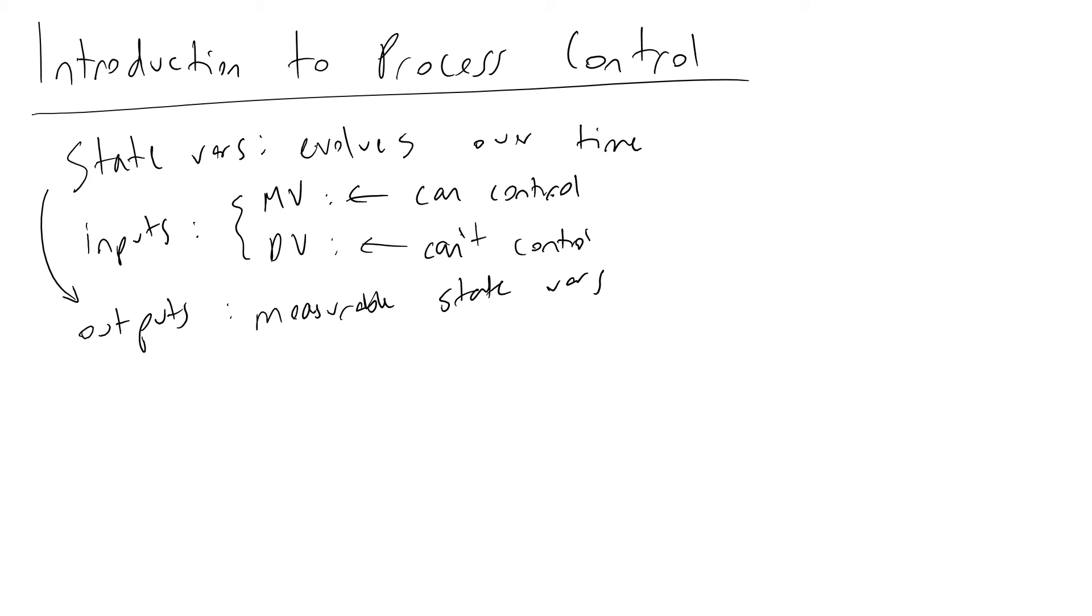By that point your reactor may be at a different concentration. Temperature would be a good example of an output that we can readily measure and evolves with time in transient systems.